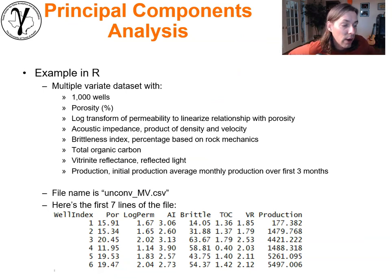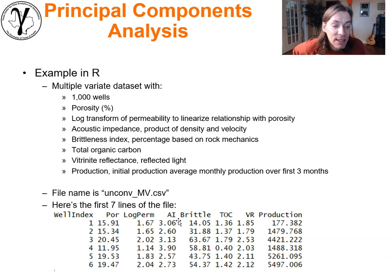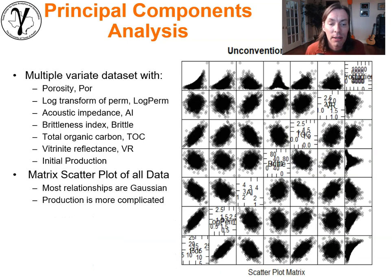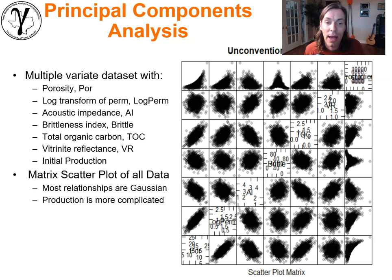Here's an example in R. The dataset has 1000 wells with permeability, porosity, acoustic impedance, brittleness, total organic carbon, and more. The dataset is available on my GitHub under the geodatasets repository. We can do a matrix scatter plot and see lots of interesting features with some non-linearity. For this example I'm going to project down to just two features at a time.